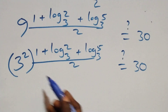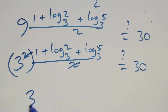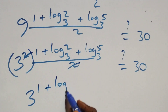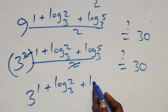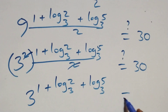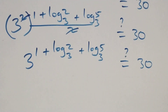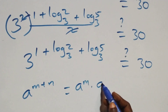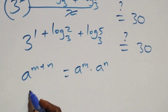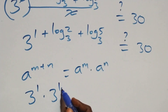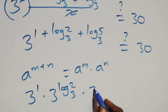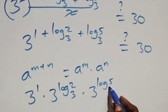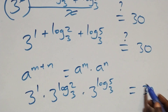The powers multiply, so 3 raised to the power (1 plus log 2 base 3 plus log 5 base 3) equals 30. We apply a law of indices: a raised to the power m plus n is the same as a raised to m, times a raised to n. So we have 3 raised to power 1, times 3 raised to power log 2 base 3, times 3 raised to power log 5 base 3, equals 30.